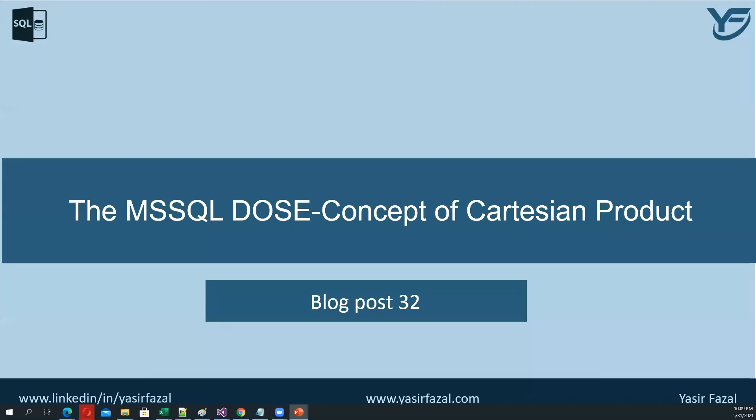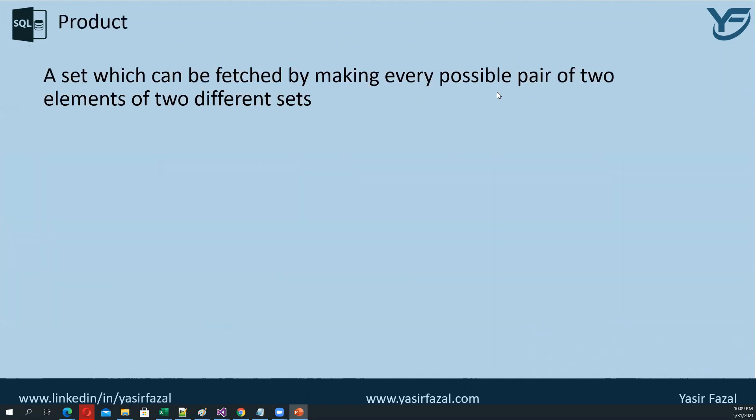Hi guys and welcome to my new blog post, blog post 32. In this blog post I'm going to discuss the concept of Cartesian product. So let us start. What is Cartesian product? Cartesian product means a set which can be fetched by making every possible pair of two elements of two different sets.